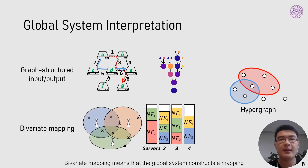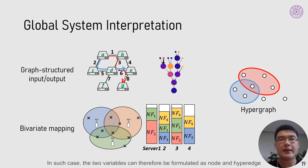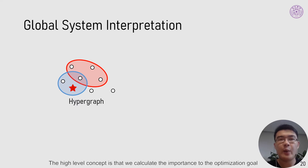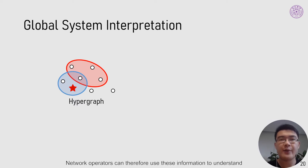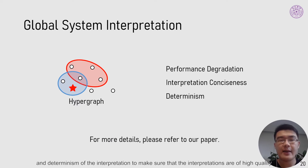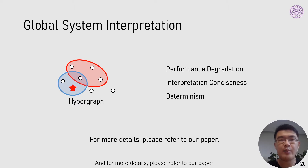Bivariate mapping means that global systems construct a mapping between two variables, such as allocating resources to requests. The two variables can therefore be formulated as nodes and hyperedges. With the hypergraph formulation, the next step is to find which connection between hyperedge and node is critical to the optimization result. We calculate the importance of every connection in the hypergraph to the optimization goal. Operators can use this information to understand why the DNN makes such decisions. Metis balances performance degradation, interpretation consistency, and determinism to ensure high-quality interpretations.